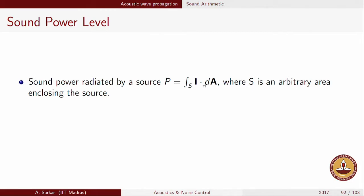Intensity is the power flow per unit area; active intensity is the time-averaged intensity per unit area. I dot dA — intensity dot-producted with the area, taking into account the normal of the area — denotes the total amount of power flowing through an infinitesimal area of magnitude dA. Integrating such pieces of power flow across all individual differential elements gives the total sound power radiated by the source.